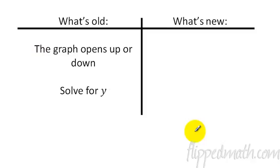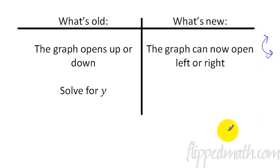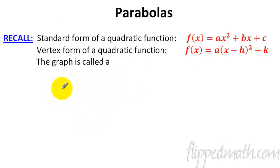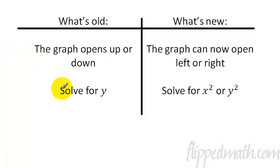What's old? The graph would either open up or down. Now we can have graphs open left or right as well. So in this lesson we're going to have it going up or down or it could also be opening to the right or to the left. And in the past we would always solve for y, but now we can solve for x squared or y squared.